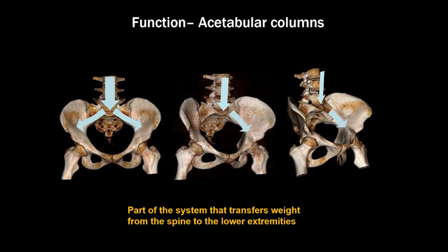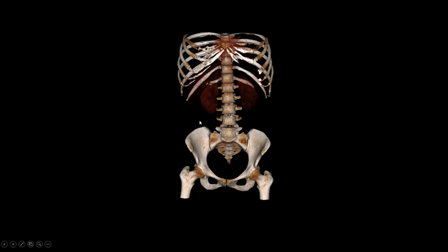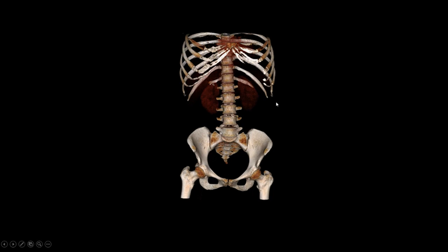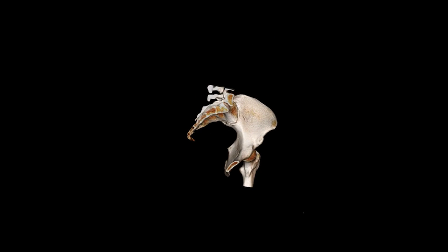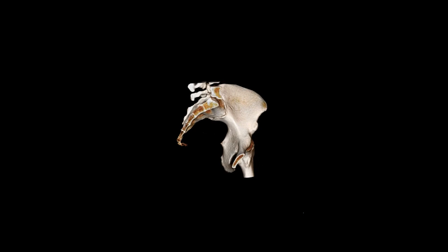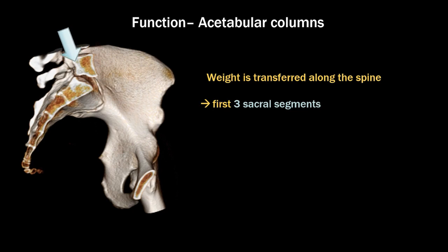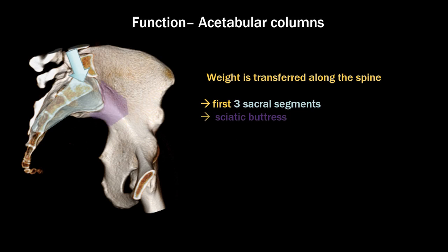Let's talk about the function of the acetabular columns. They're basically part of a large system that transfers weight from your spine down into the lower extremities. Here is a skeleton, and we're going to zoom up on the acetabulum and the pelvis from the medial aspect. Weight coming down from the spine transfers from the lumbar spine into the first three sacral segments, which then transfer weight into the sciatic buttress.